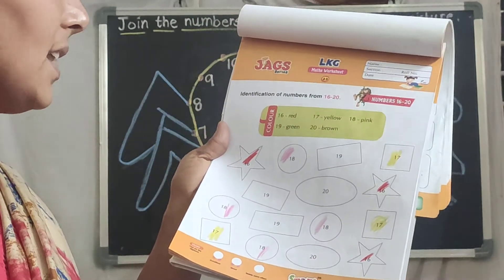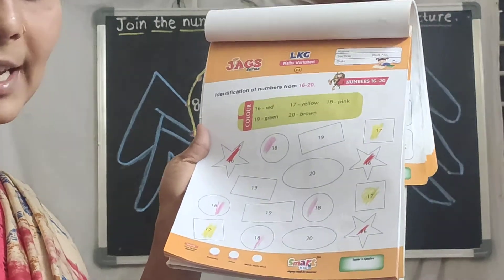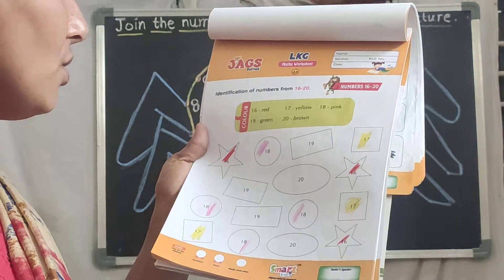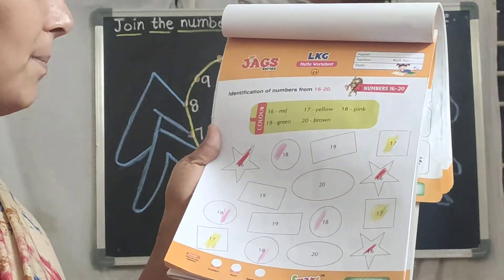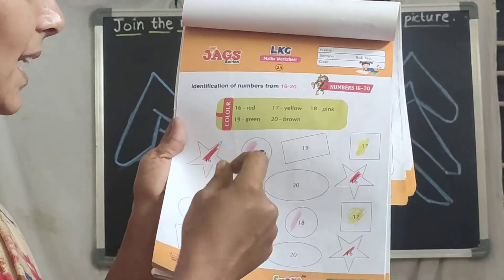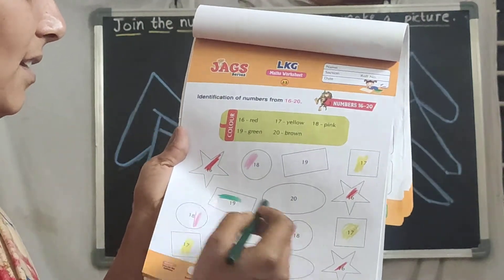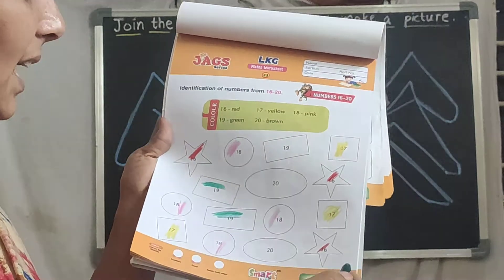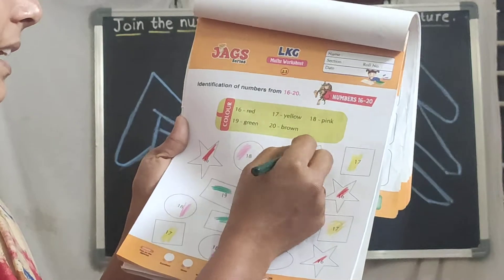18 after, which number will come children? 19. Where is the 19? Which shape is that? That is a rectangle. Here you should do the green color. For every 19 and for every rectangle, you should do the green color.